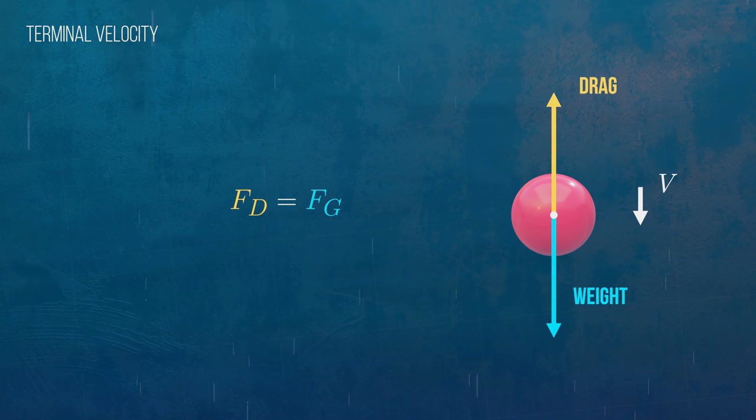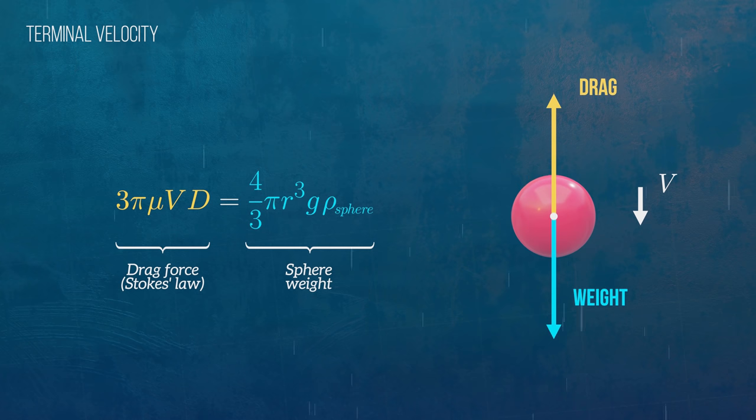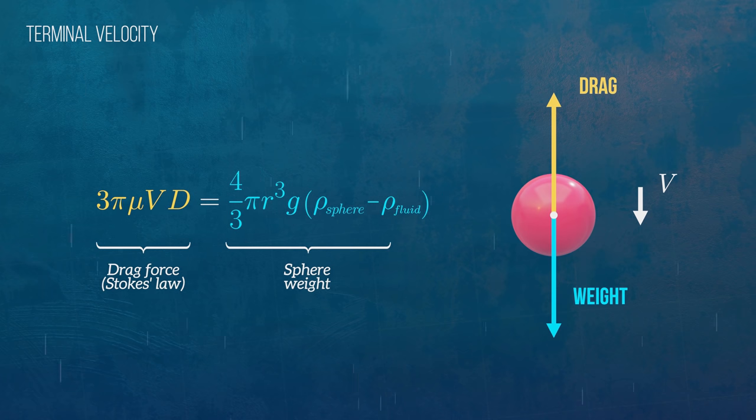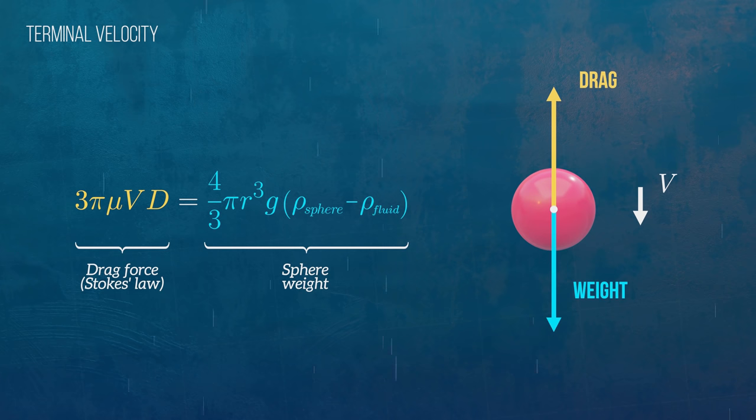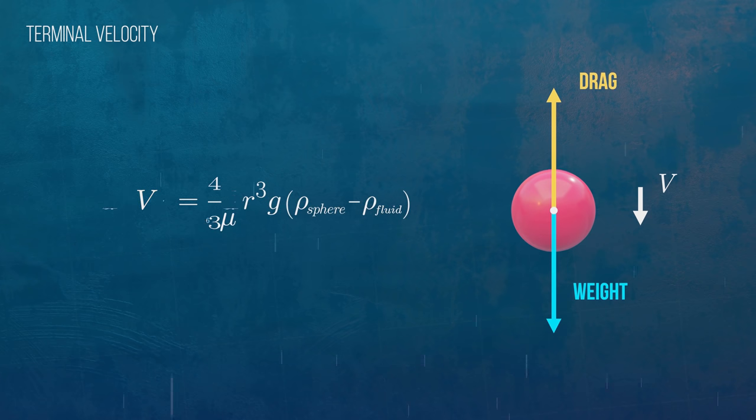The drag force is defined by Stokes' Law, and the weight of the sphere is easy to calculate based on its volume and density. We just need to remember to subtract the density of the fluid as well to account for the buoyancy force. And so, based on Stokes' Law, we can obtain this equation for the terminal velocity of the sphere.